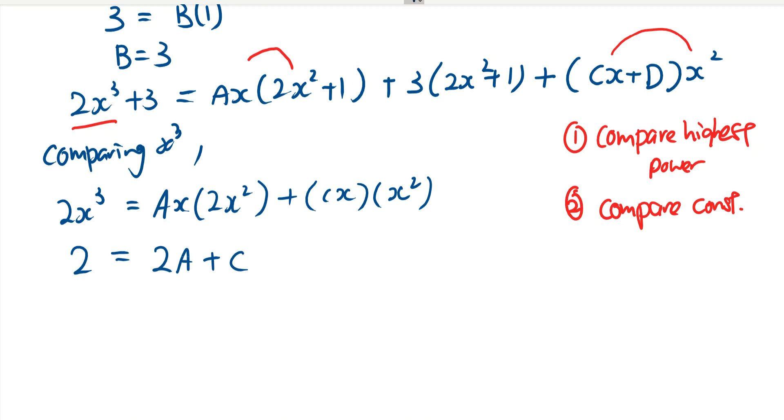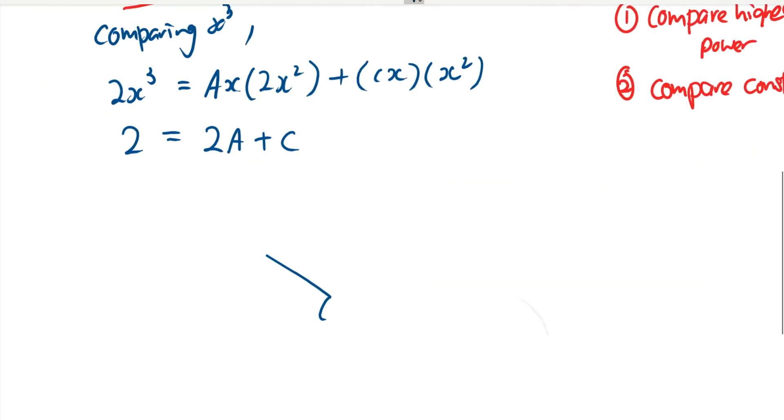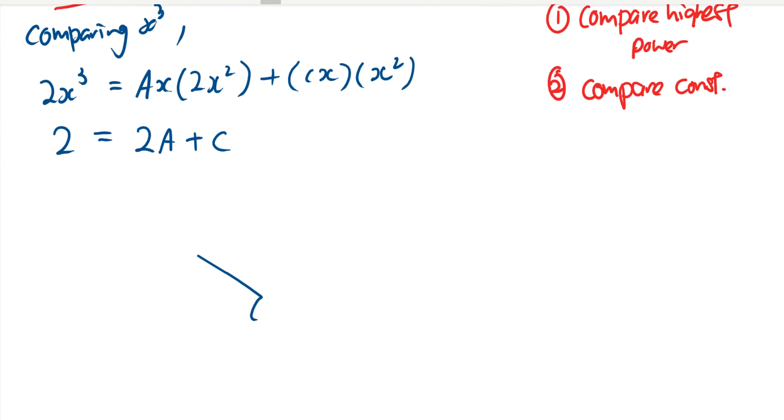So I have 2 unknowns. Now, if you have 2 unknowns, you need 2 equations to solve. So first, make your habit, I will make c the subject for the first one because I know that I'm definitely going to use simultaneous equation. So c equals to 2 minus 2a. And this is my equation number one.